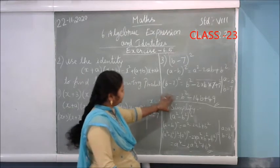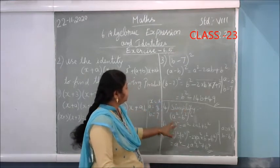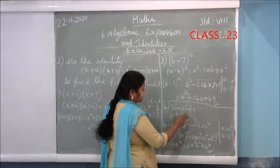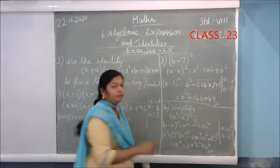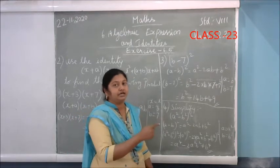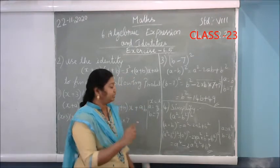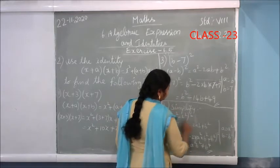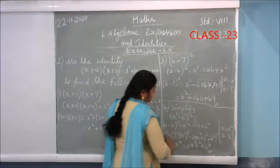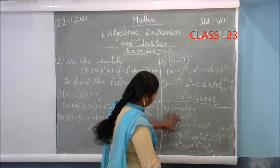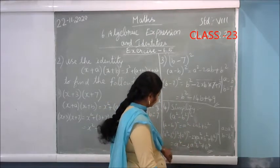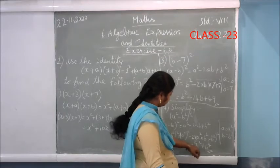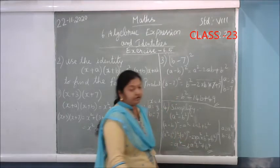The next sum is to simplify (A²-B²)². This is also the second identity — the minus sign means use the second identity. Here instead of A put A², instead of B put B². Simplifying gives: A⁴ - 2A²B² + B⁴.